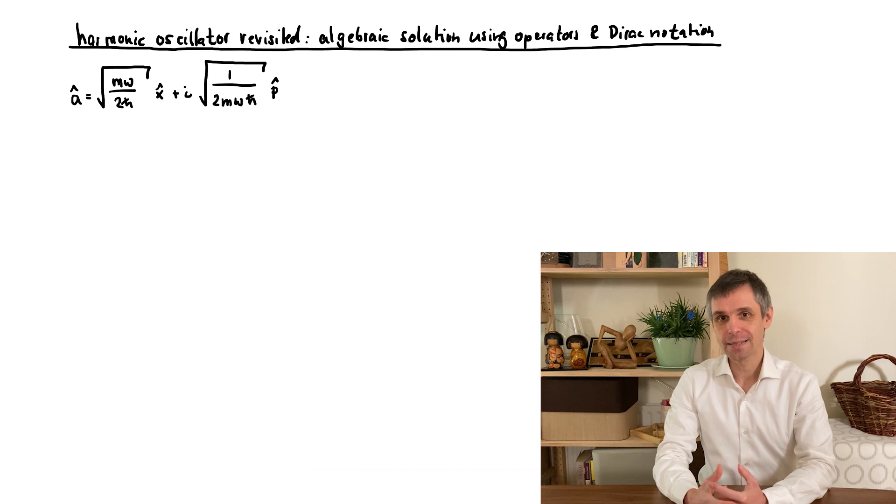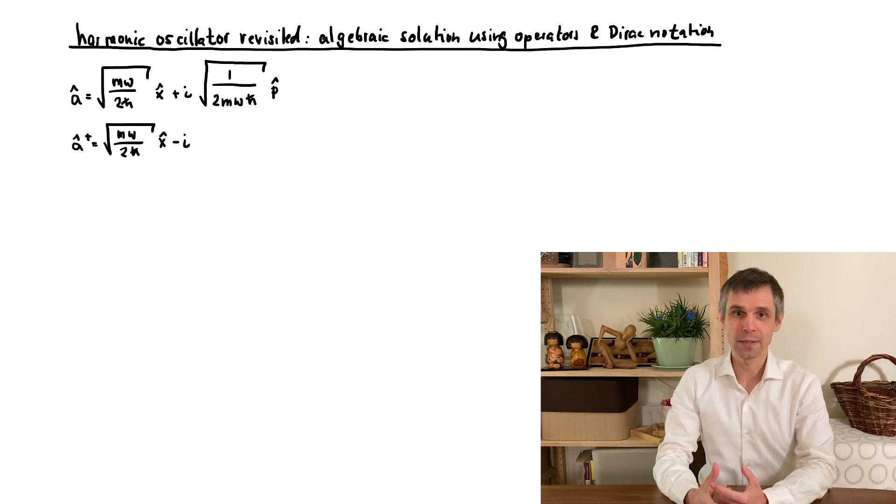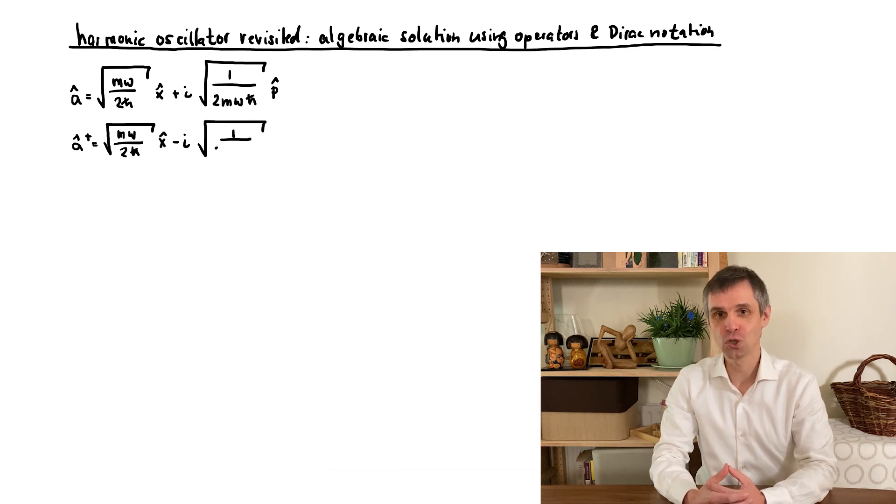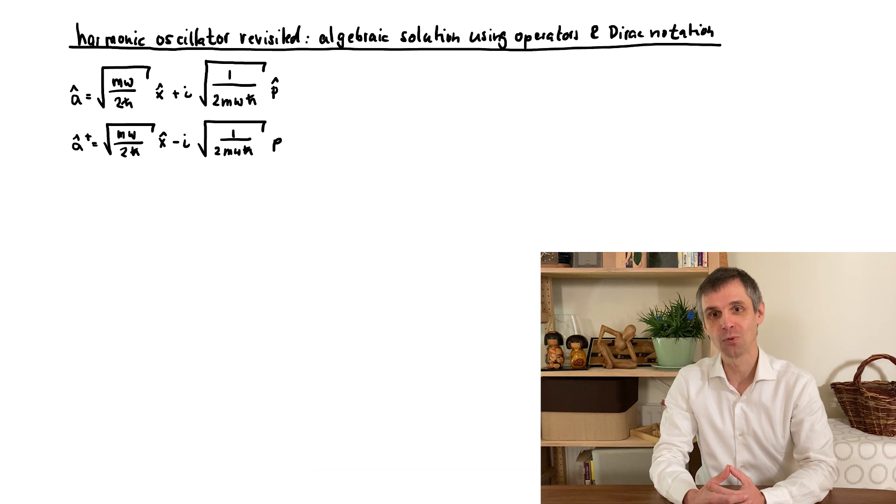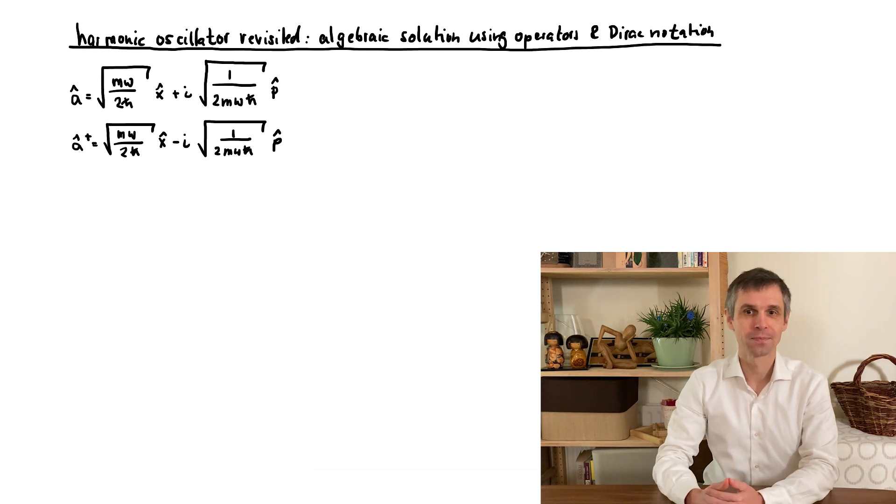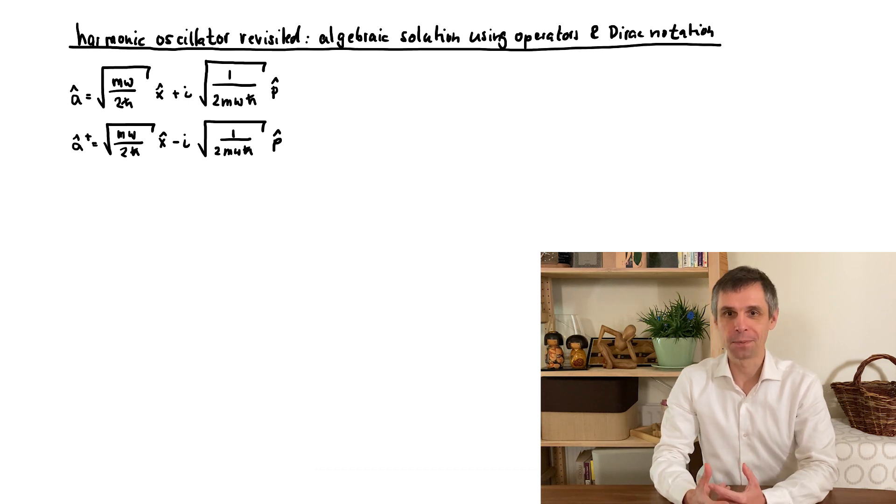In any case, this suggests to also introduce a second object, denoted here by A with a dagger, which you can view as a complex conjugate of this. It's really the Hermitian conjugate that we introduced just before with our general notation.